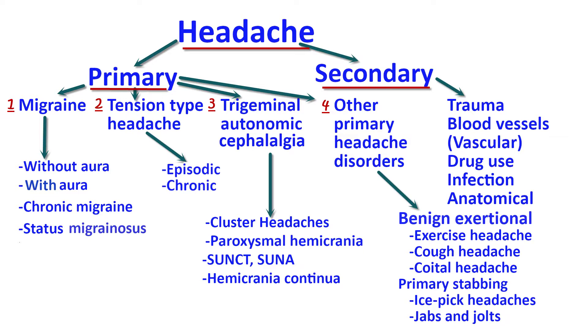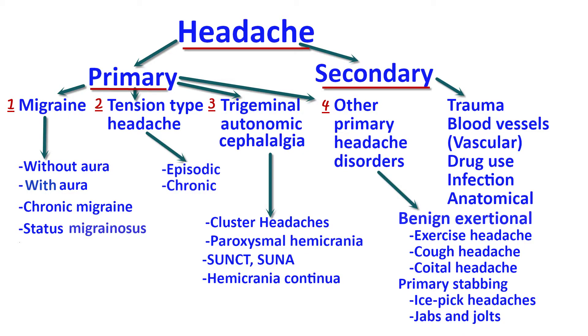Primary headaches can be divided into four groups. The first group is migraines — headaches that appear on one side of the head, although migraines can be bilateral in about 40% of cases, lasting anywhere from four to 72 hours. They are throbbing and pulsating in nature, moderate to severe in intensity, and generally accompanied by symptoms such as nausea and vomiting, photophobia, and phonophobia — sensitivity to light and sensitivity to sound.